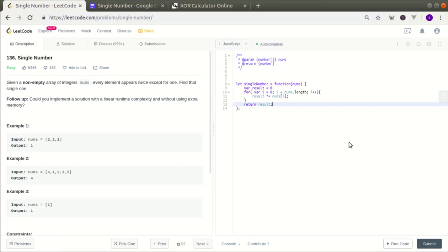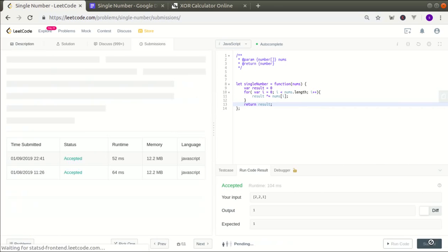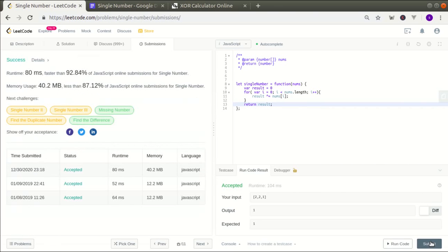So result, the XOR symbol equals nums[i]. So we do that from the first element to the last and then we simply return the result. So let's run the code. And there you have it. Let's submit it. And there it is.